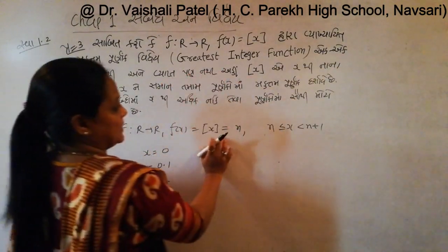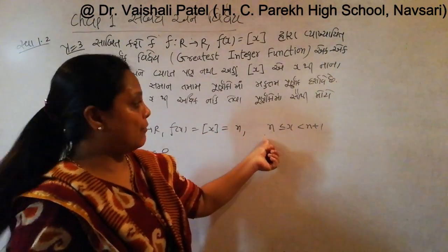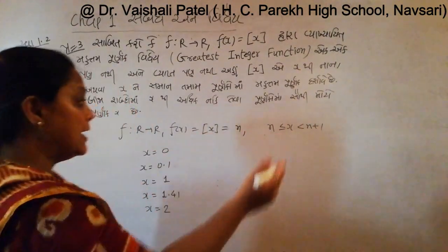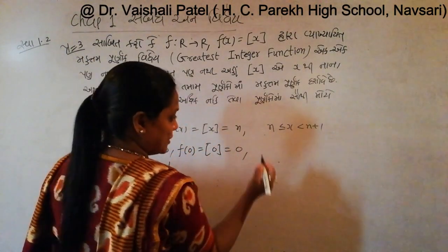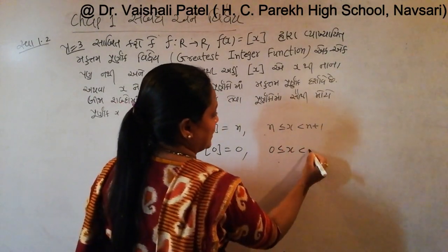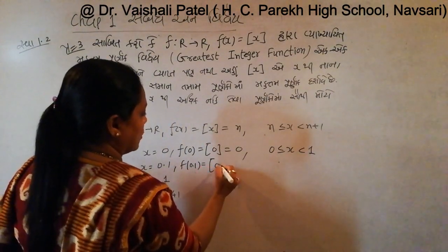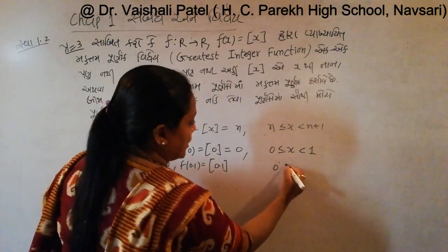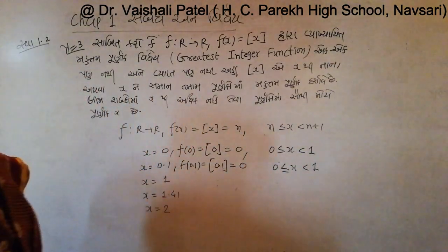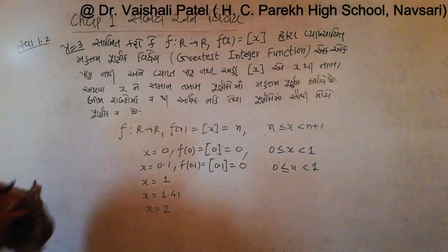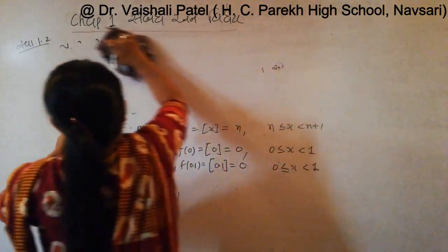For the floor function, the definition is: n is less than or equal to x, which is less than n plus 1, where n is an integer.